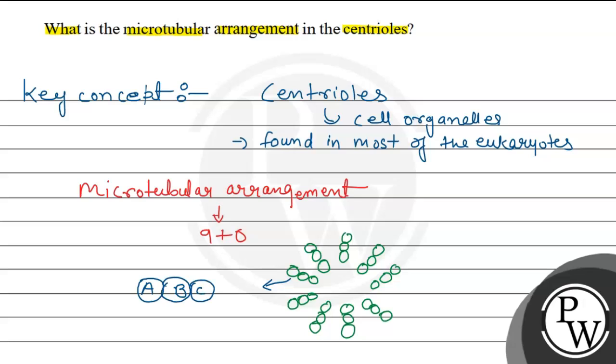So this is the structure of centriole, and two centrioles which are hollow cylinders perpendicular to each other. And each centriole is a microtubular structure formed of microtubules arranged in 9 plus 0 manner.